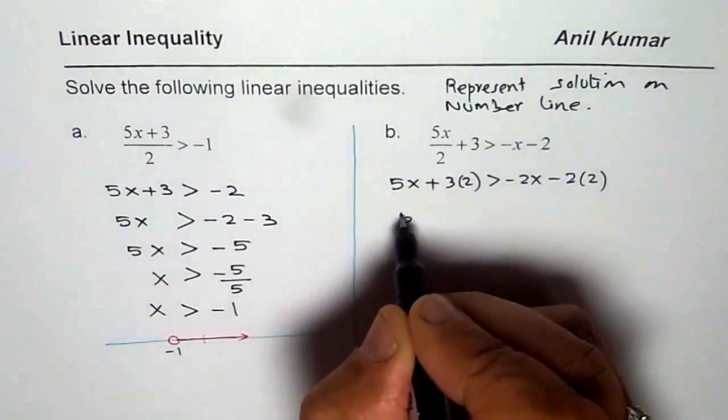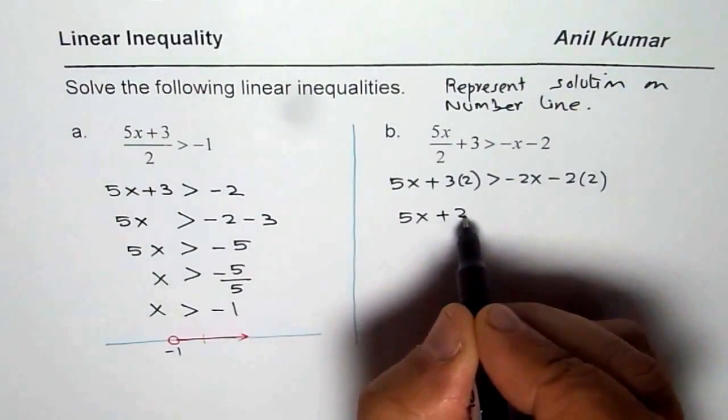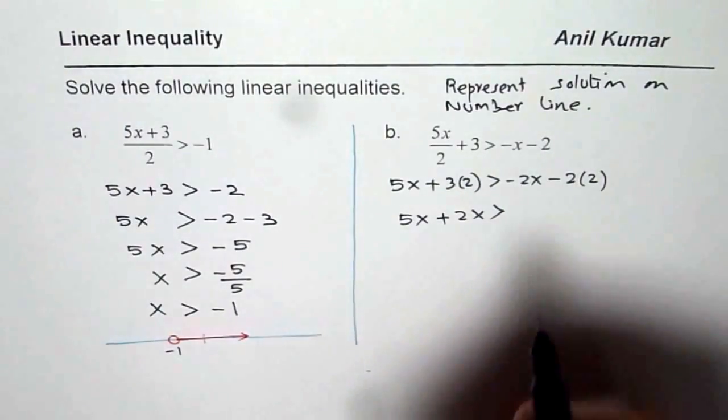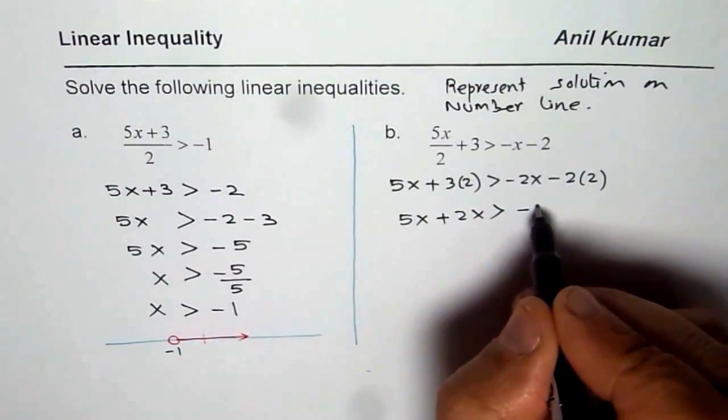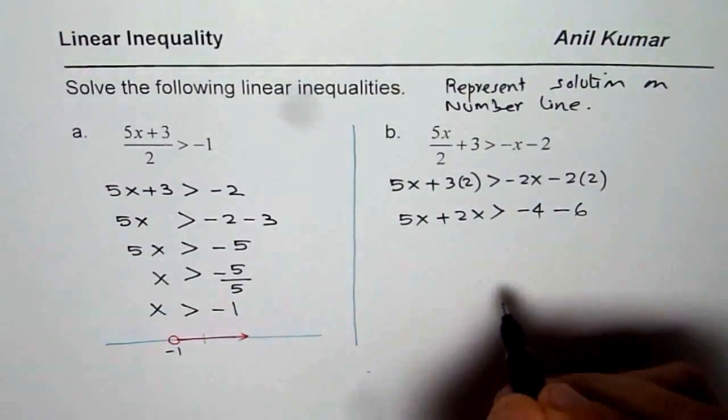So that is to say we have 5x here. Let us bring minus 2x to the left side. So we get plus 2x. So you are bringing variables to the left, constants to the right. So here we have minus 4, 2 times 2. 3 times 2 is 6, bringing it to the negative 6 on the right side.